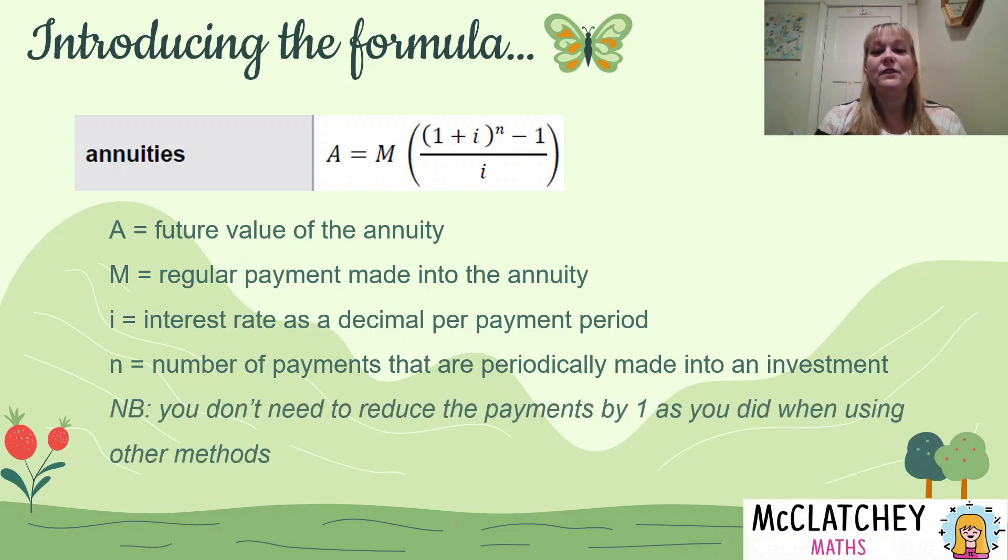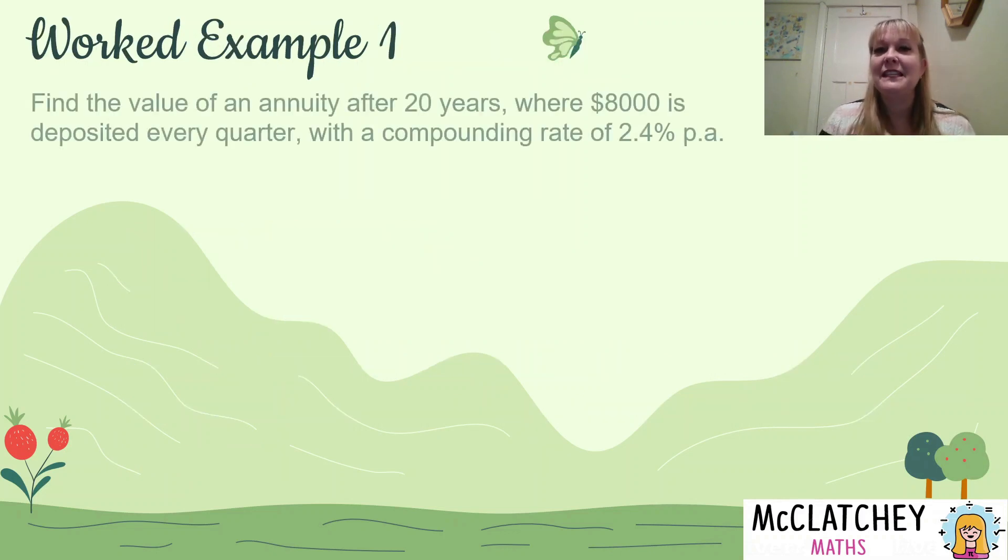So let's have a look at our first worked example in a moment. One thing to remember though, is that when we've done previous examples where we've worked out manually after each period of time what the value of the annuity is, in this particular case we don't have to reduce the number of payments by one. This formula is treating it as that. So we don't have to do that ourselves. So N is just the exact number of compounding periods for the whole life of the annuity.